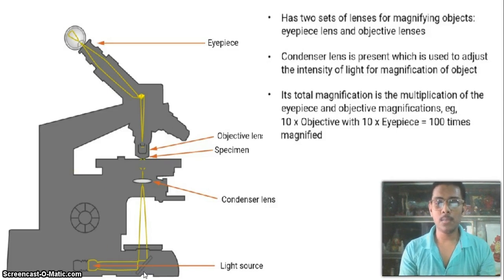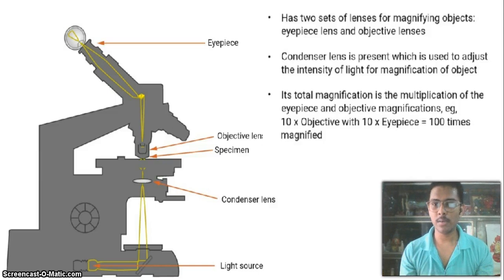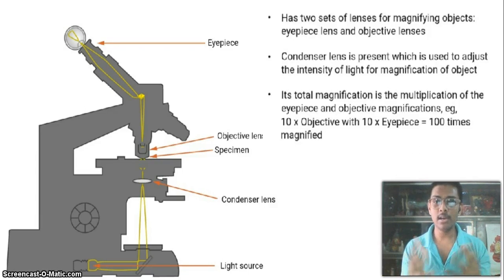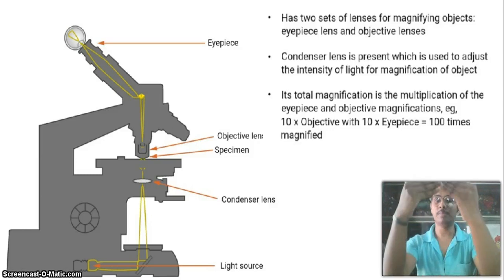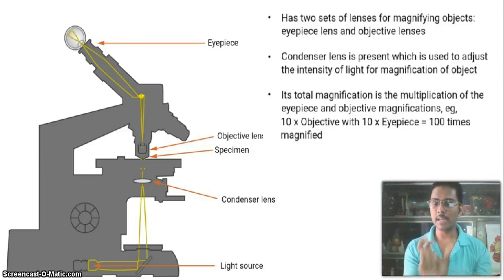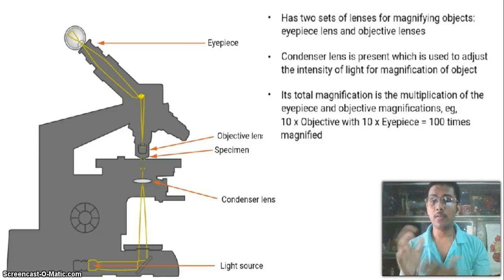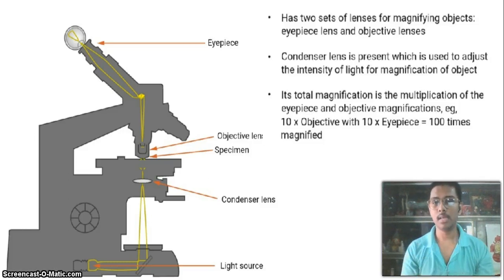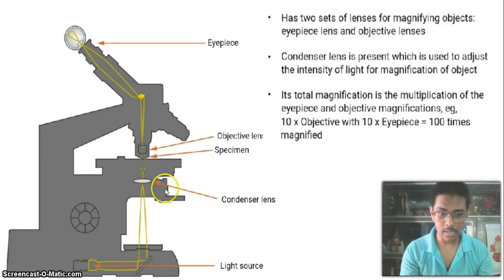The light from the light source passes through a series of mirrors and comes to the condenser lens. The condenser lens converts the light beam into a well-mannered, focused beam. This focused beam then falls on the specimen, so the condenser lens is placed before the specimen. It has no role in magnification — it only converts light into a focused beam.